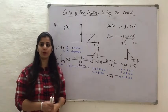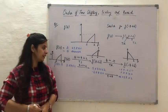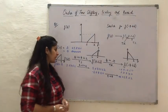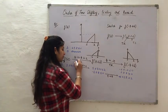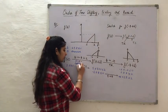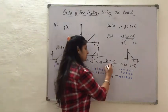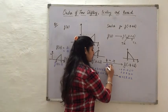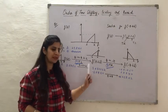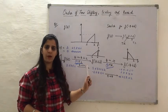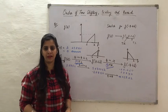The important point of observation here is that the first operation applied was time shifting and the second was time reversal. Now let us see what happens when we apply these operations in the opposite order.